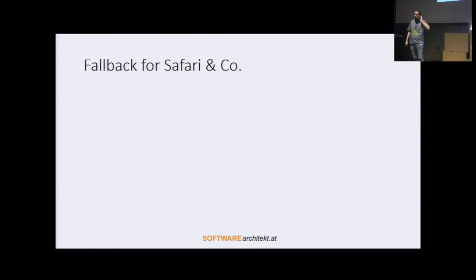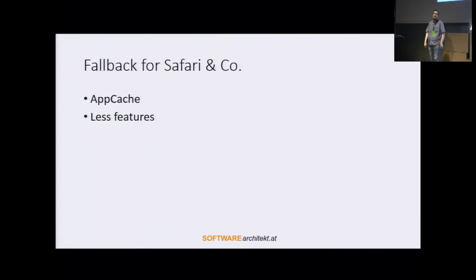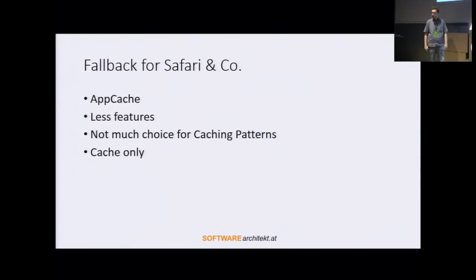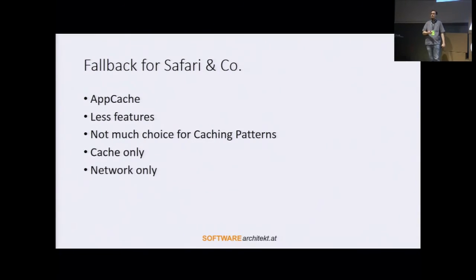But there are some fallbacks for Safari and other browsers — some technologies that have been around for some years and are working. For instance, there is the app cache, a mechanism introduced with HTML5, which also allows for caching data for offline access. The downside is it provides fewer features — you don't have as many caching patterns; just something like cache only or network only. You can't implement cache-first-then-network or other nice patterns. But in the sense of progressive enhancements, we can use these tools to provide the best experience available for the device and browser the user is using.